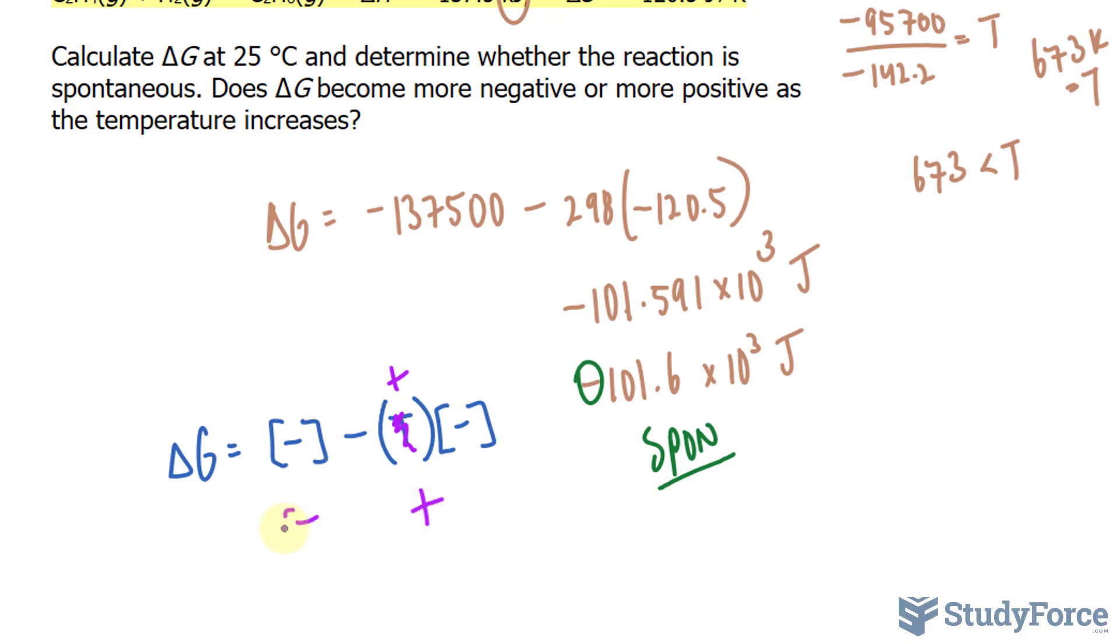You would then be combining a negative number with a positive number. Depending on how big that positive number is, your delta G could be either positive or negative. Which suggests that the bigger your positive number is, or the more positive the temperature becomes, the more it increases in other words, the less likely delta G is to be negative. So does delta G become more negative or more positive? It becomes more positive if you increase the temperature more and more and more.